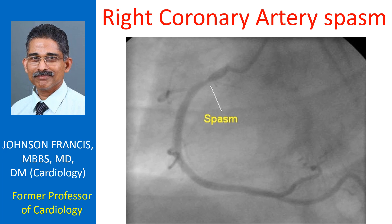Spasm of the right coronary artery is noted as a discrete narrowing in the proximal RCA without any significant lesion elsewhere. This is a quite common observation in the RCA and can be related to irritation by the catheter tip. It may subside spontaneously on withdrawal of the catheter.